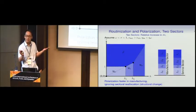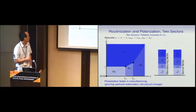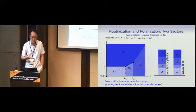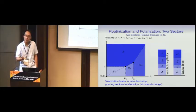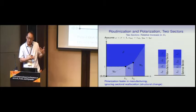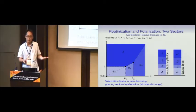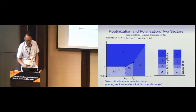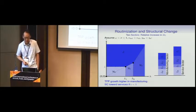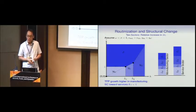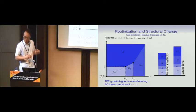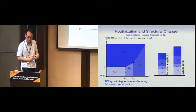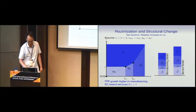Think Leontief again. Because manufacturing relies more on routine worker tasks, although the TFP change at the occupation level is not sector-specific, manufacturing TFP endogenously rises faster than services because of its higher loading on that occupation. With manufacturing and service outputs as complements, now there's too much manufacturing goods relative to service goods. So you kick people from manufacturing to services. That final loop gives us structural change on top of the polarization results.